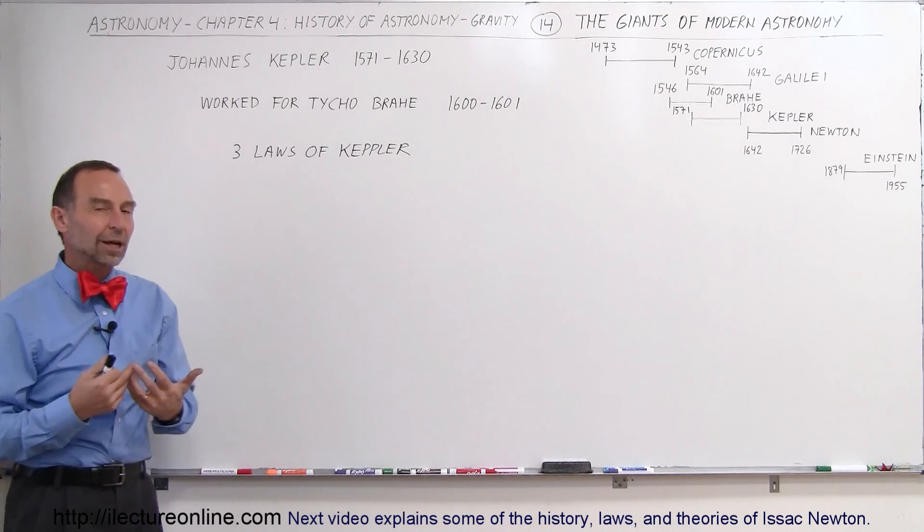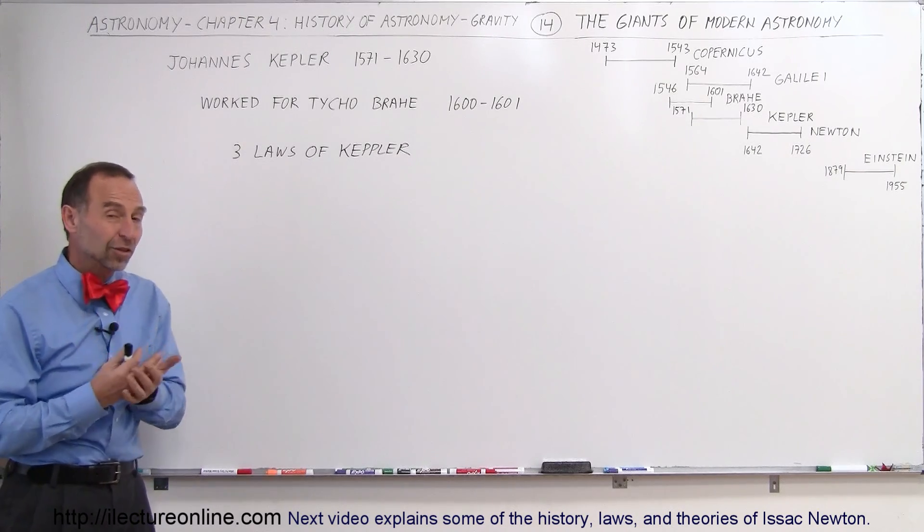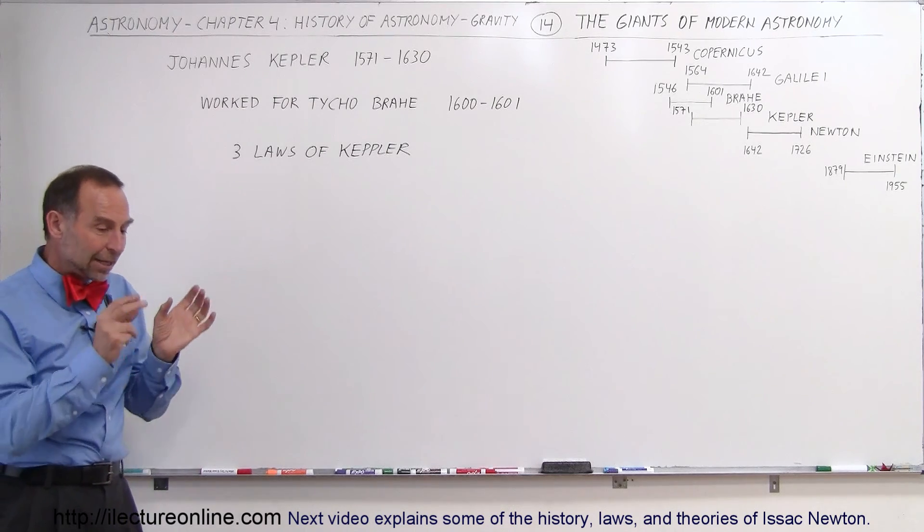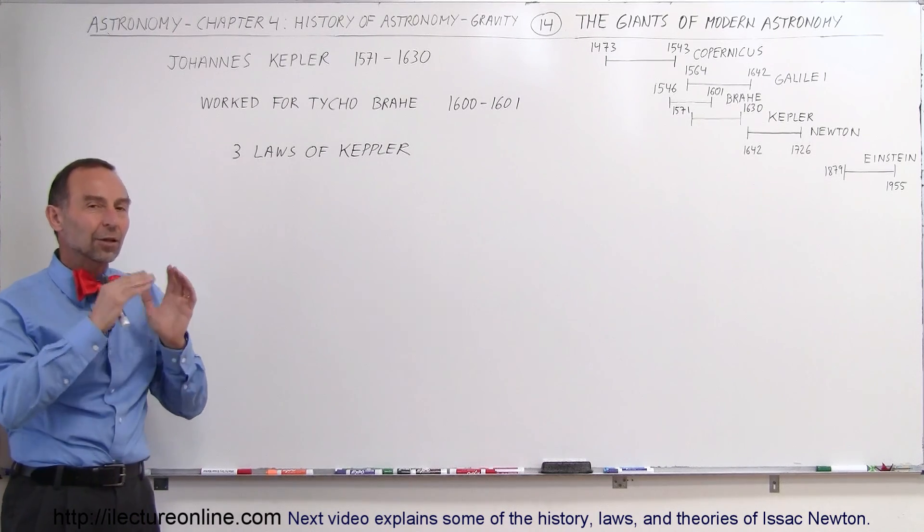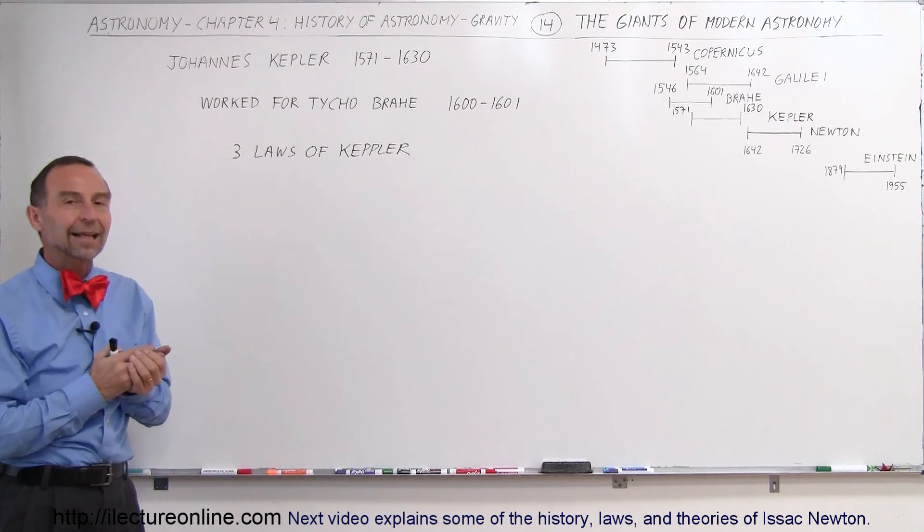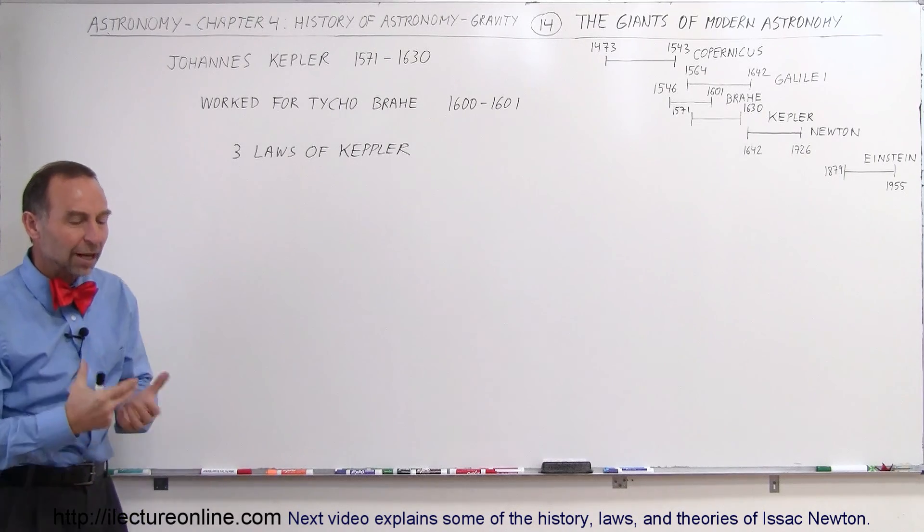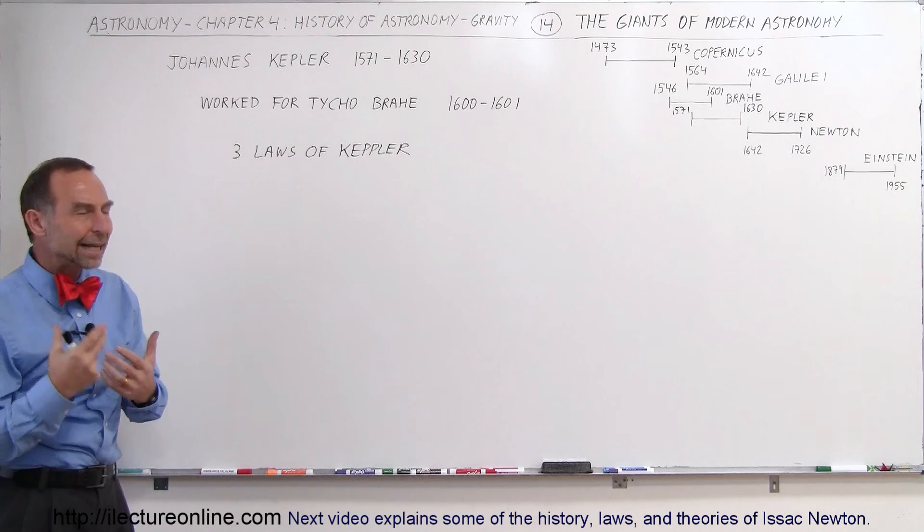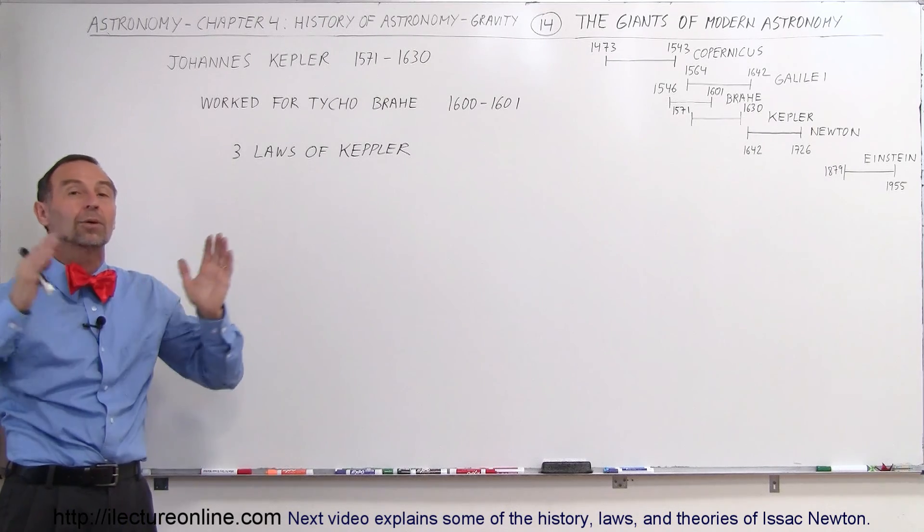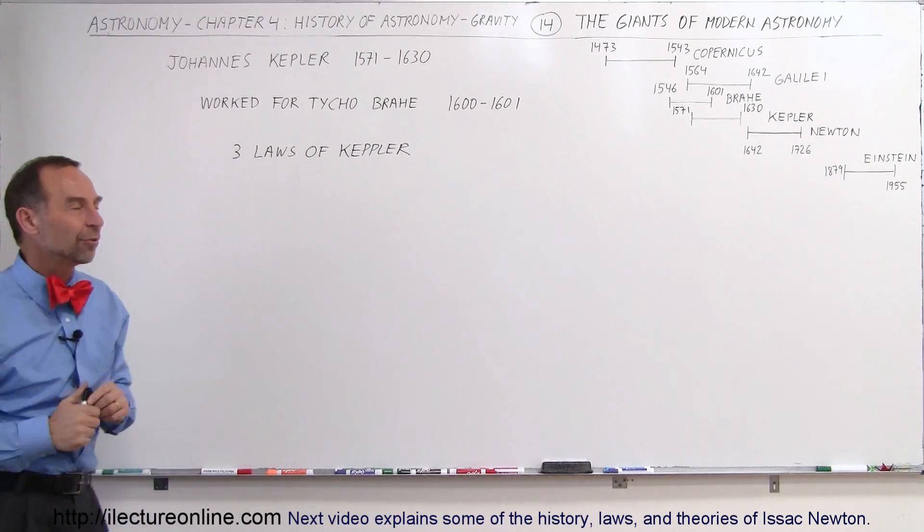At first he began to work with Tycho Brahe and Tycho could see that Kepler was a very smart individual. He dug into the information and data that he received from Tycho to start working on it, and you could see that he was really getting the understanding of what that data might mean, the data that Tycho had collected over his life of observations.